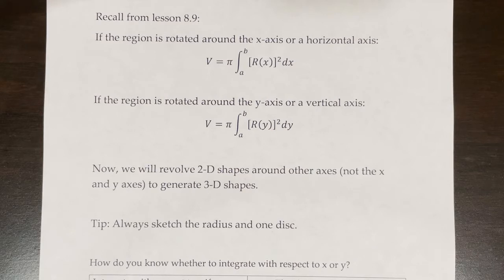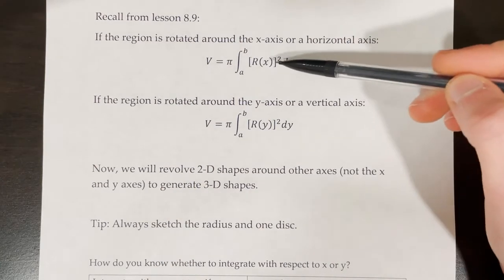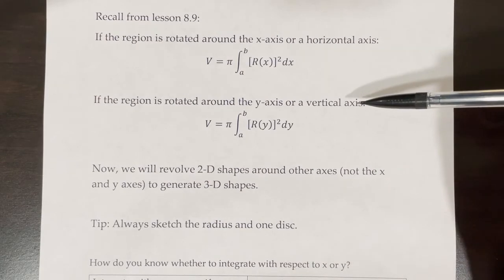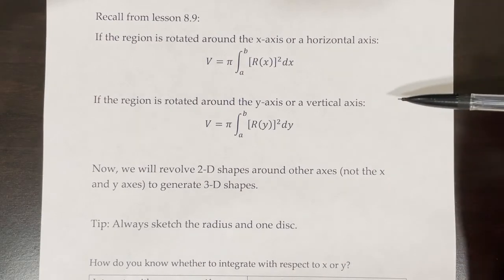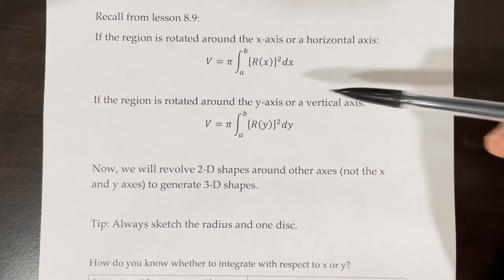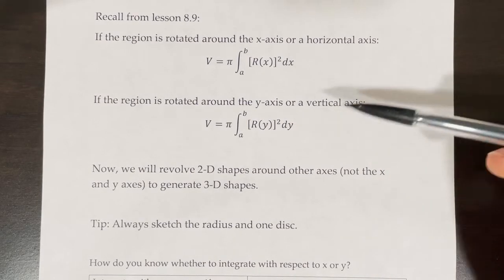Recall from the previous lesson, 8.9, that if the region is rotated around the x-axis or a horizontal axis, the way that you find the volume is by taking pi and then multiplying that by the integral from a to b of the radius in terms of x squared dx. But if the region is rotated around the y-axis or a vertical axis, then v is equal to pi times the integral from a to b of the radius in terms of y squared dy.